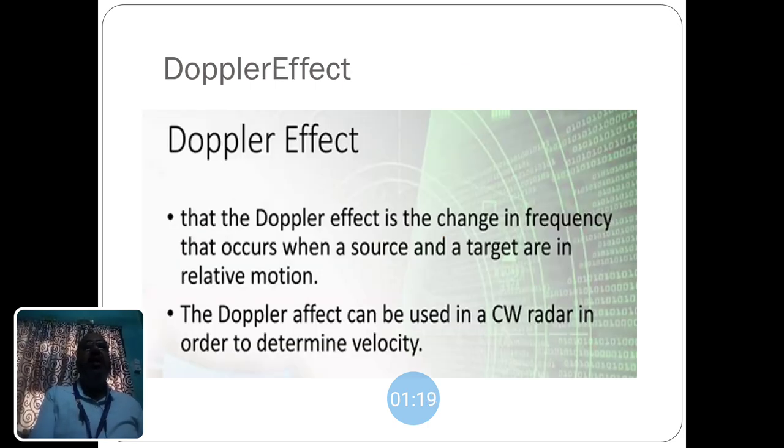It works under the Doppler effect. The Doppler effect is the change in frequency that occurs when a source and a target are in relative motion. The Doppler effect can be used in a CW radar in order to determine velocity.